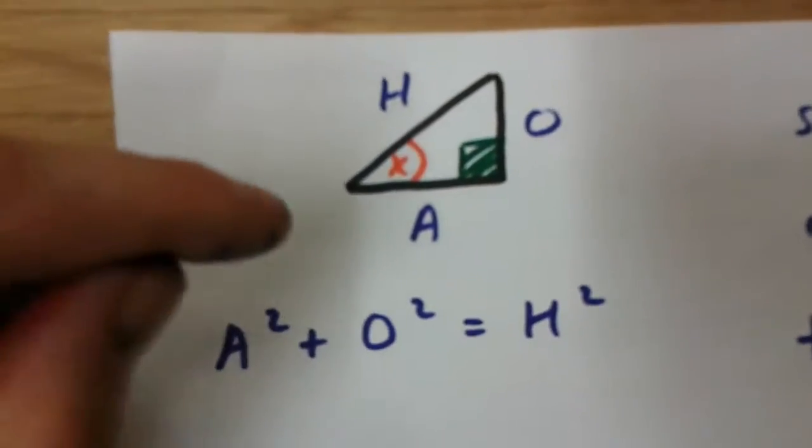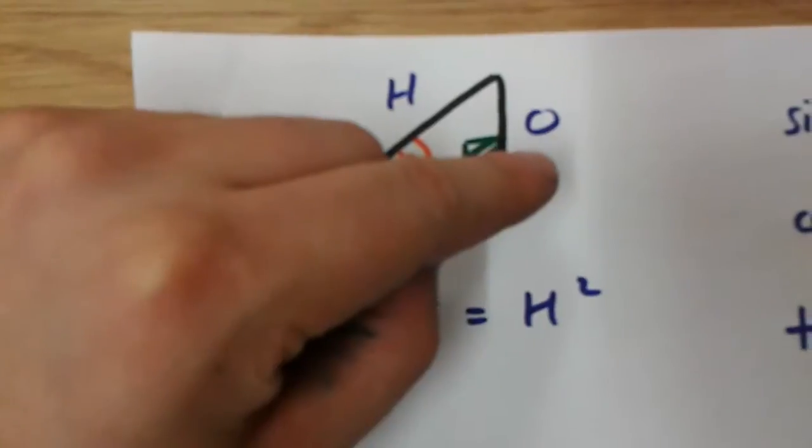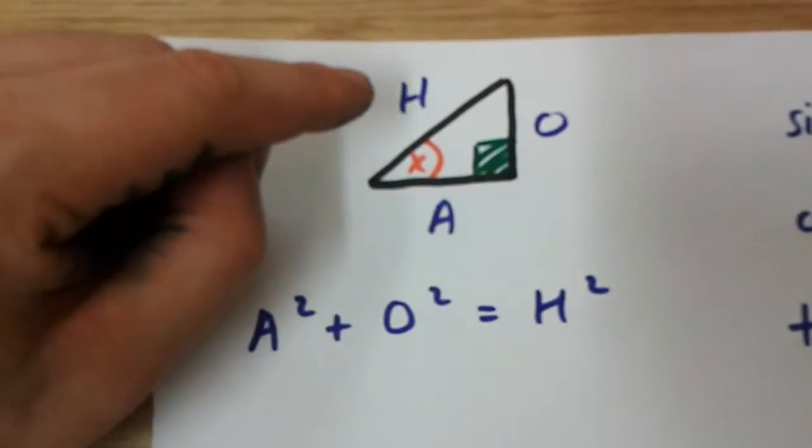Take a look at this right angled triangle. It has an adjacent side, an opposite side, and a hypotenuse.